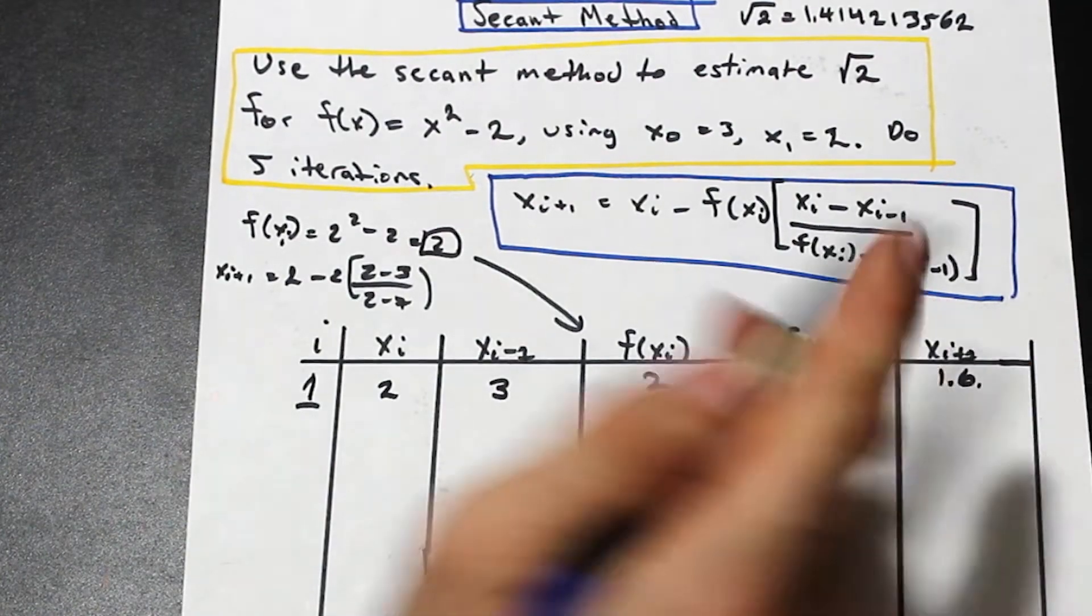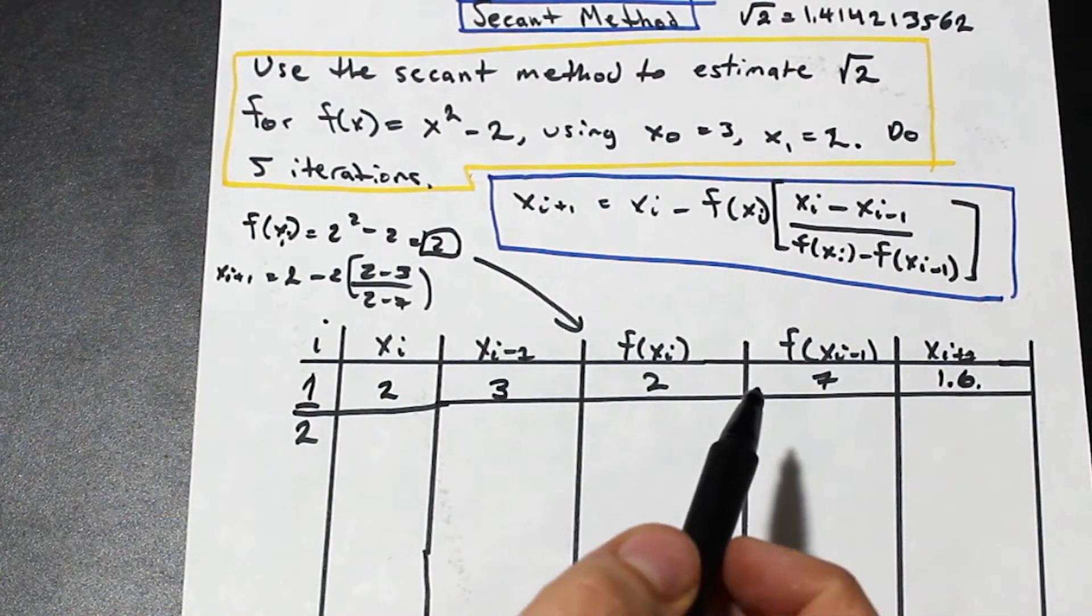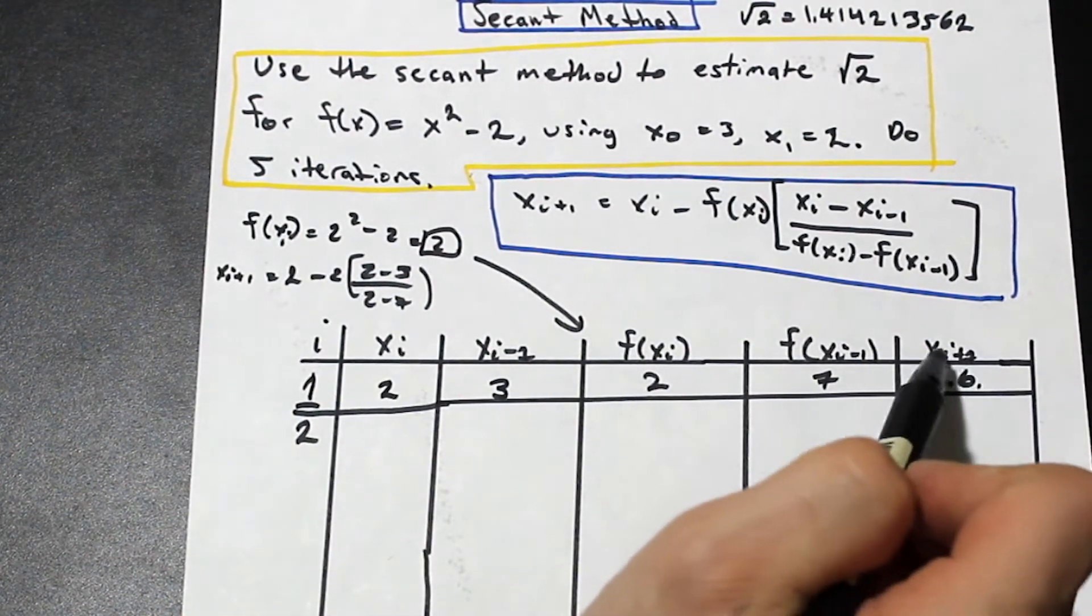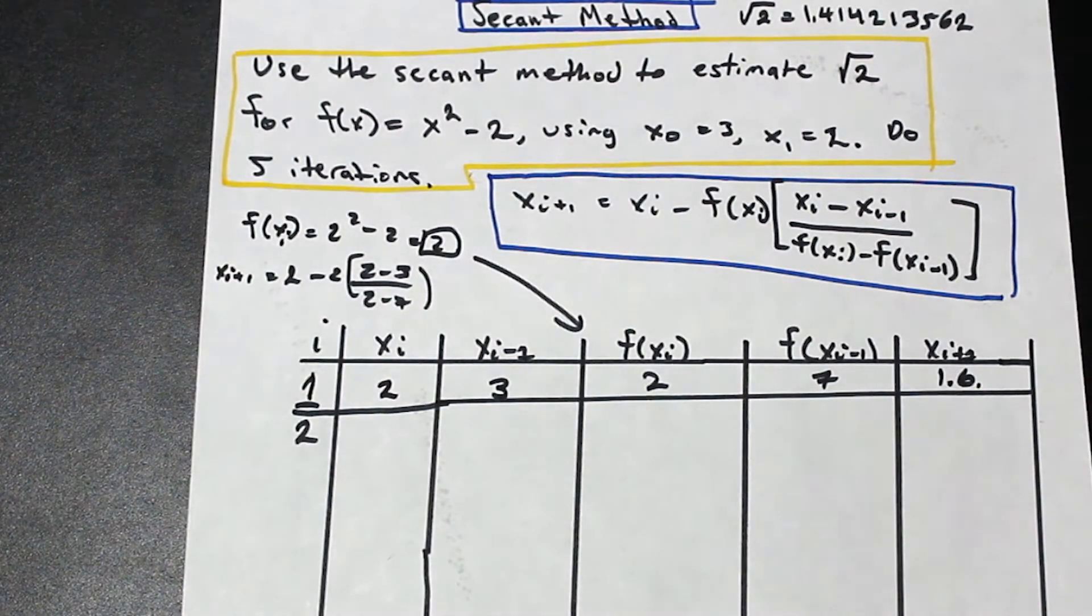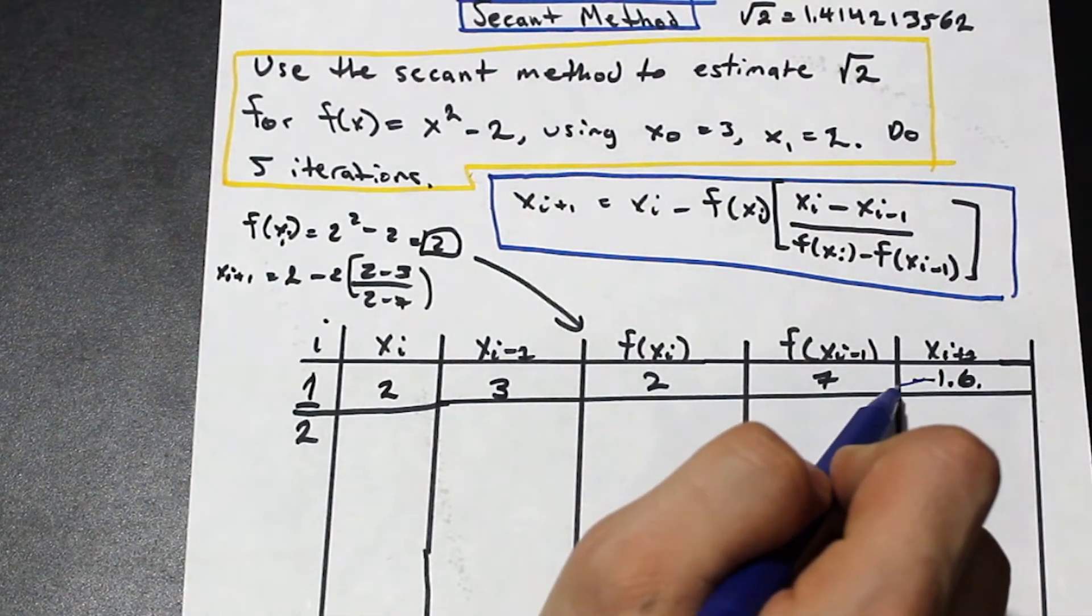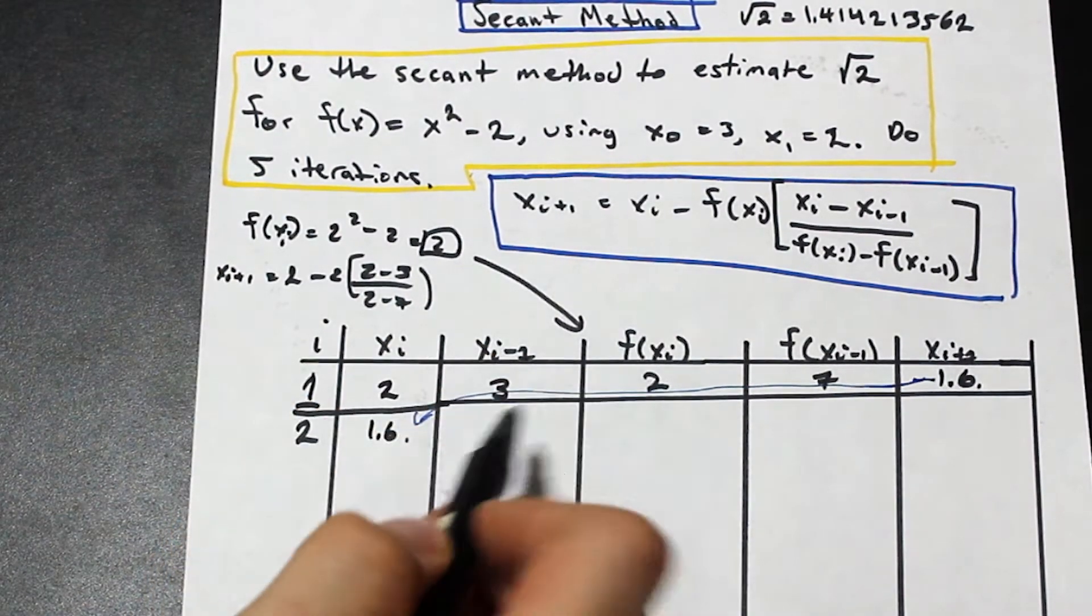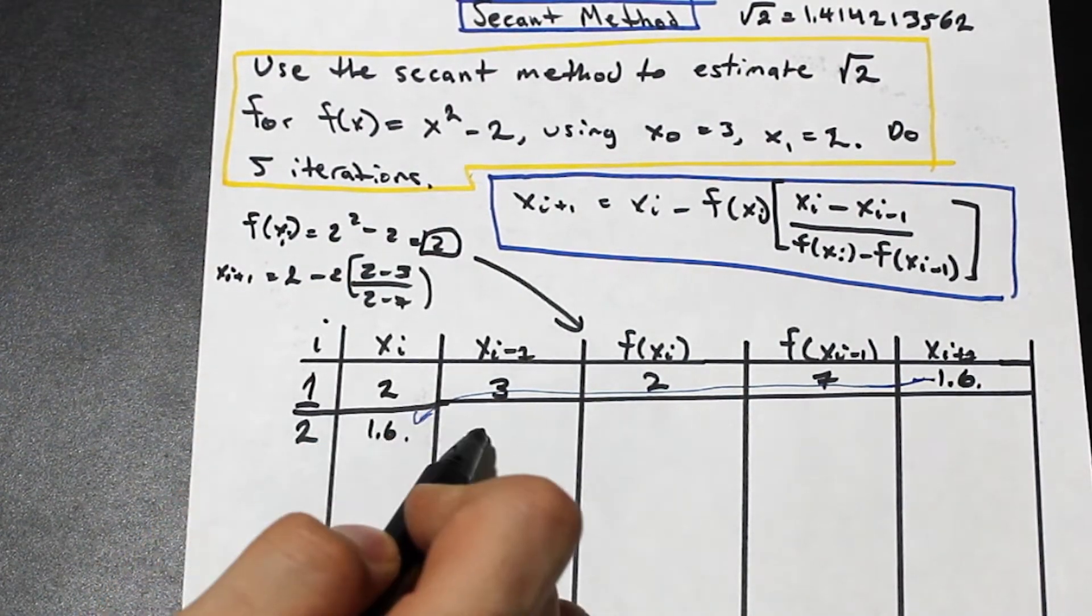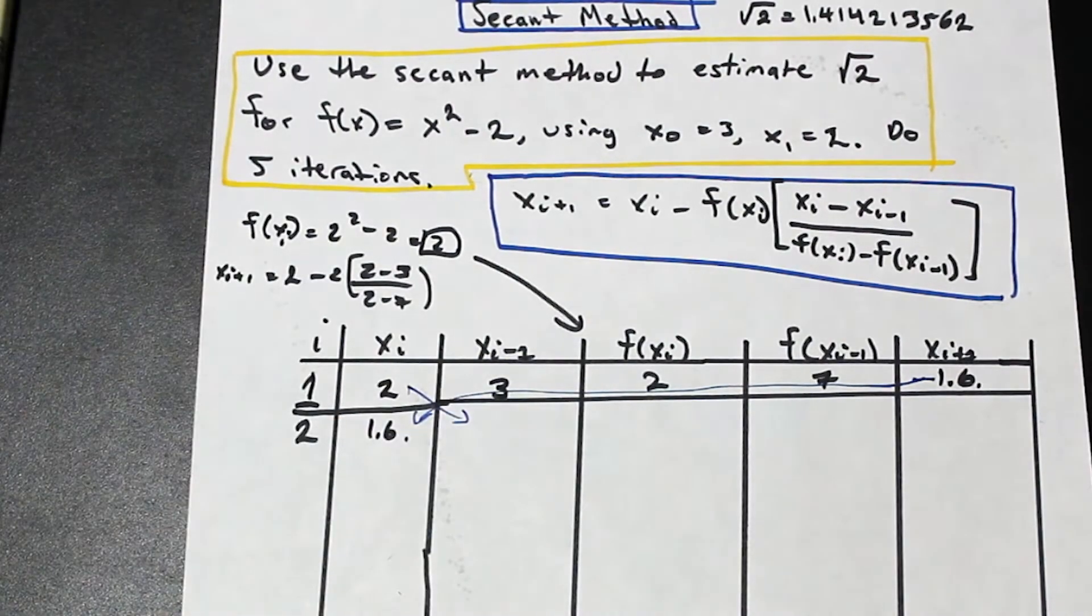Cool, so now let's go ahead and let's start the second iteration. What's our xi and what's our xi-1 now? So our xi now is the iteration that we just did, so that's the xi+1. So this one is going to come over here. So this is 1.6. And now the xi from the previous iteration, which was xi, is now xi-1. So this is going to come over here.